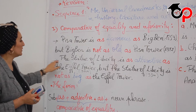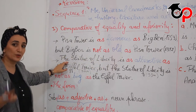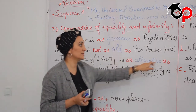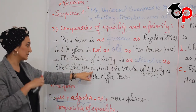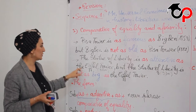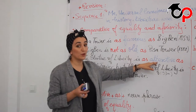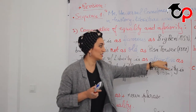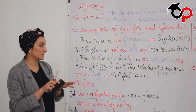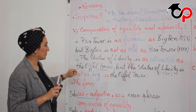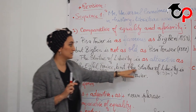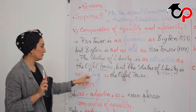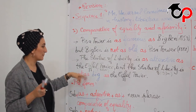A second example is about the Statue of Liberty, which is situated in New York, United States of America. The Statue of Liberty is as attractive as the Eiffel Tower. The Eiffel Tower is situated in Paris, France. These two are really attractive monuments, very beautiful. We use 'as adjective as' because they share the same quality — they are similar or equal somehow.